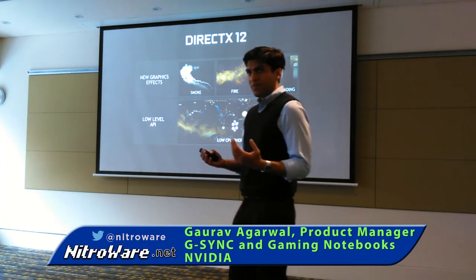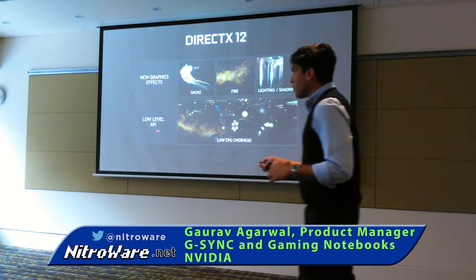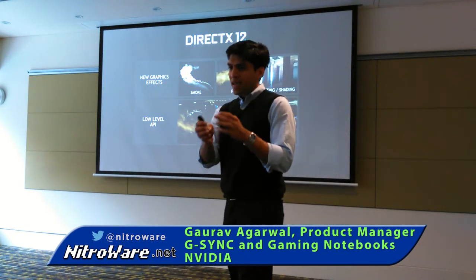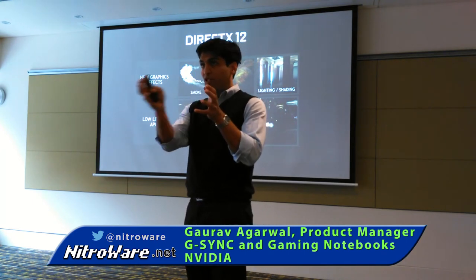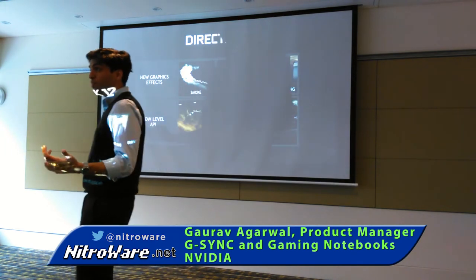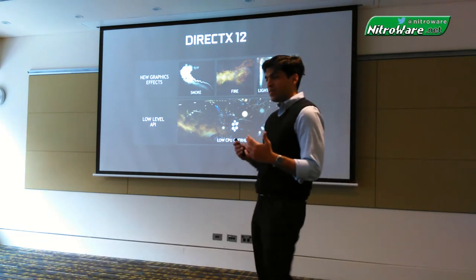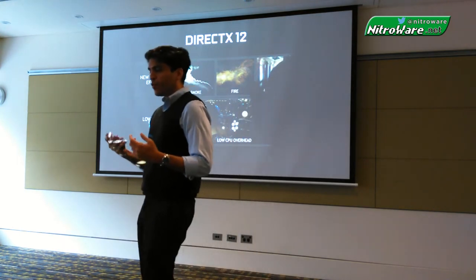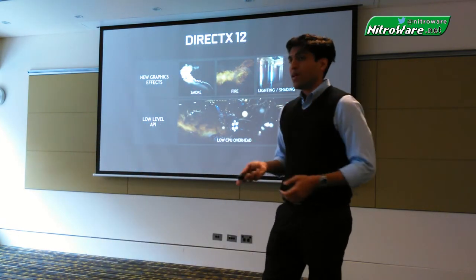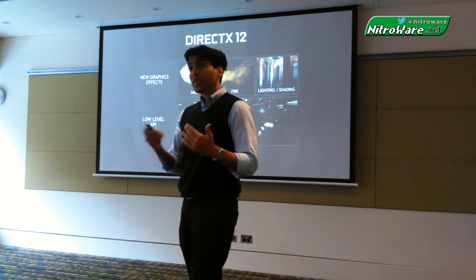The DX12 API really consists of two parts. There's the low-level API, and frankly this is the part that got the most attention by press. What this part does is it shifts the workload from the CPU to the GPU — that's great for a card like the 980 Ti because it's so powerful it can bear a lot more load. But the part that's not talked about enough is the new graphics effects that DX12 enables: things like very realistic, photorealistic fire, lighting, shadows, and smoke.